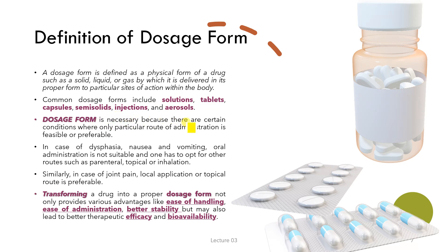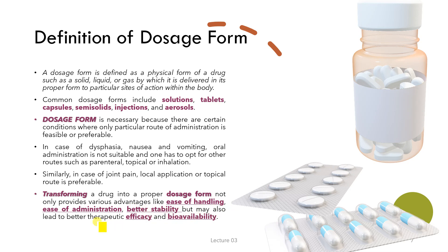A dosage form is very necessary because certain conditions make only a particular route of administration feasible or preferable. For example, in cases of dysphagia, nausea, and vomiting, oral administration is not suitable, and other routes such as parenteral, topical, or inhalation must be used. Similarly, for joint pain, a local or topical application is more preferable than the oral route. Therefore, transforming a drug into a proper dosage form provides advantages like ease of handling, ease of administration, better stability, and leads to better therapeutic efficacy and bioavailability.